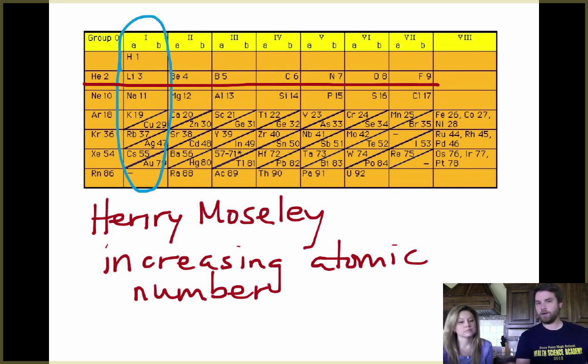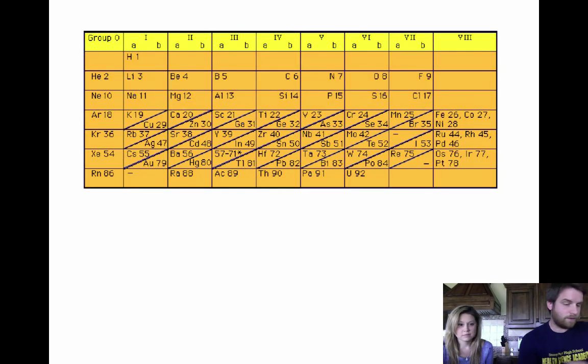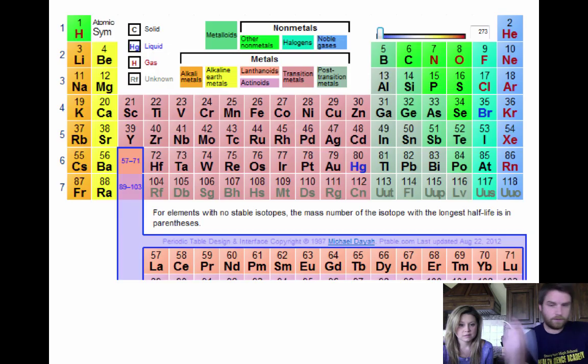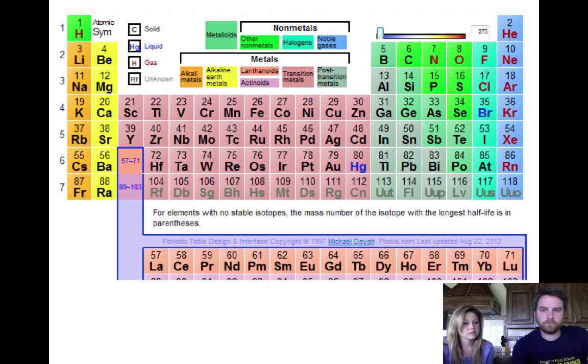So that was Moseley's contribution there, and basically then we end up back at this table right here. There's a lot of stuff that happened between Moseley and this table, but that's not something you really have to worry about at this point. So what's really cool is every time they discover a new element, it still fits into this pattern. And so we just keep discovering them and we keep fitting them into this pattern. So it seems like a good idea.